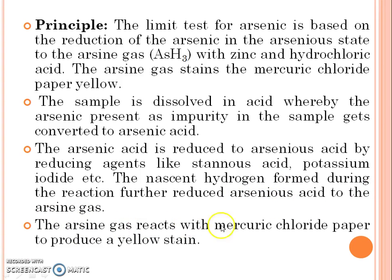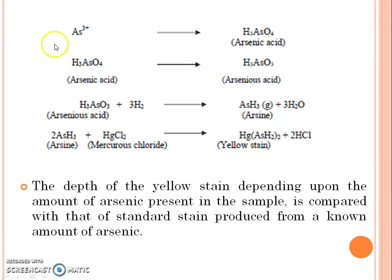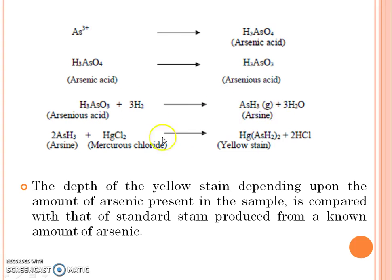The arsenic gas reacts with mercury chloride paper to produce a yellow stain. Arsenic gets converted into arsenic acid by the reaction with acid. The arsenic acid is then reduced to arsine by a reducing agent, and arsine reacts with nascent hydrogen to give arsenic gas, which on reaction with mercury chloride paper gives a yellow stain. The depth of the yellow stain, depending upon the amount of arsenic present in the sample, is compared with that of the standard stain produced from a known amount of arsenic.